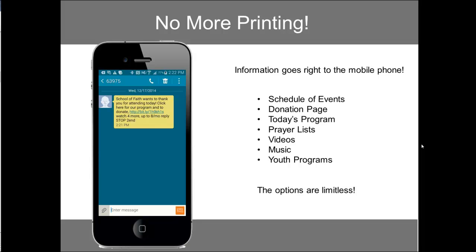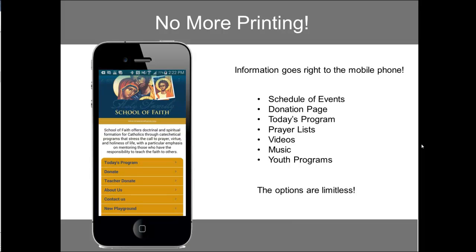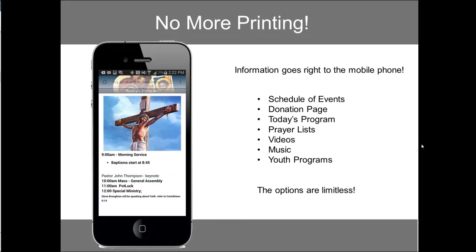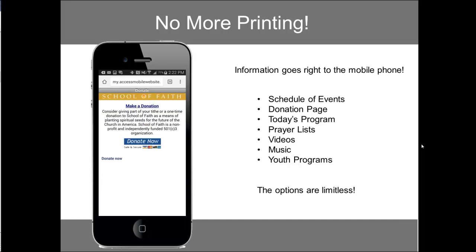What they get back is a text message right to their phone. In that text message, they can click the link. When they click the link, they can easily look at the program of events right on their phone, and you can update that easily without knowing any programming at all — and you update it daily.